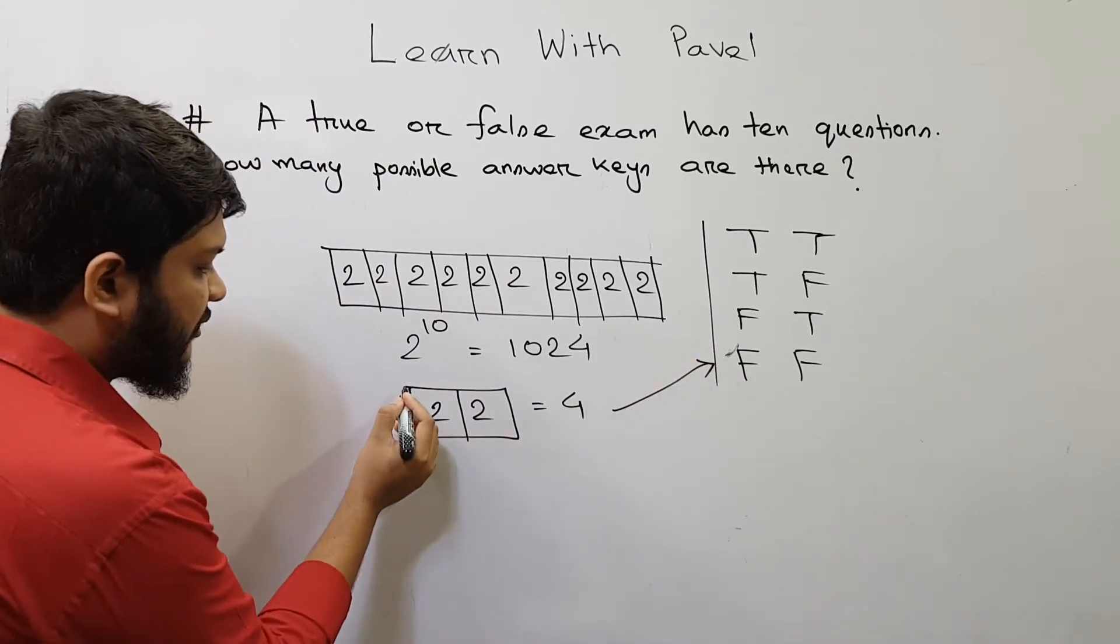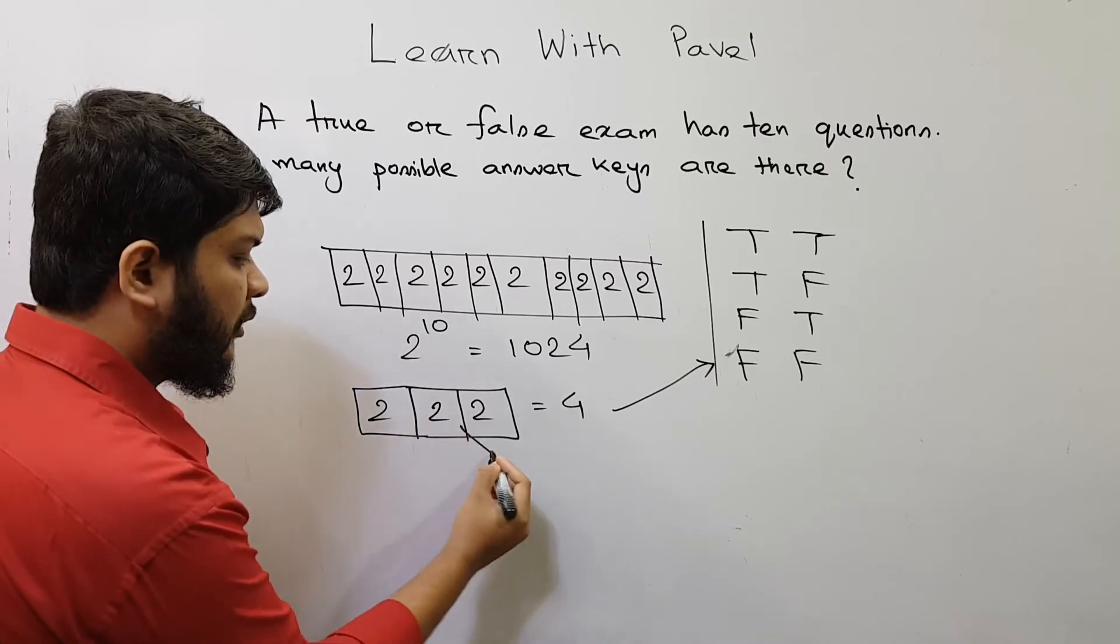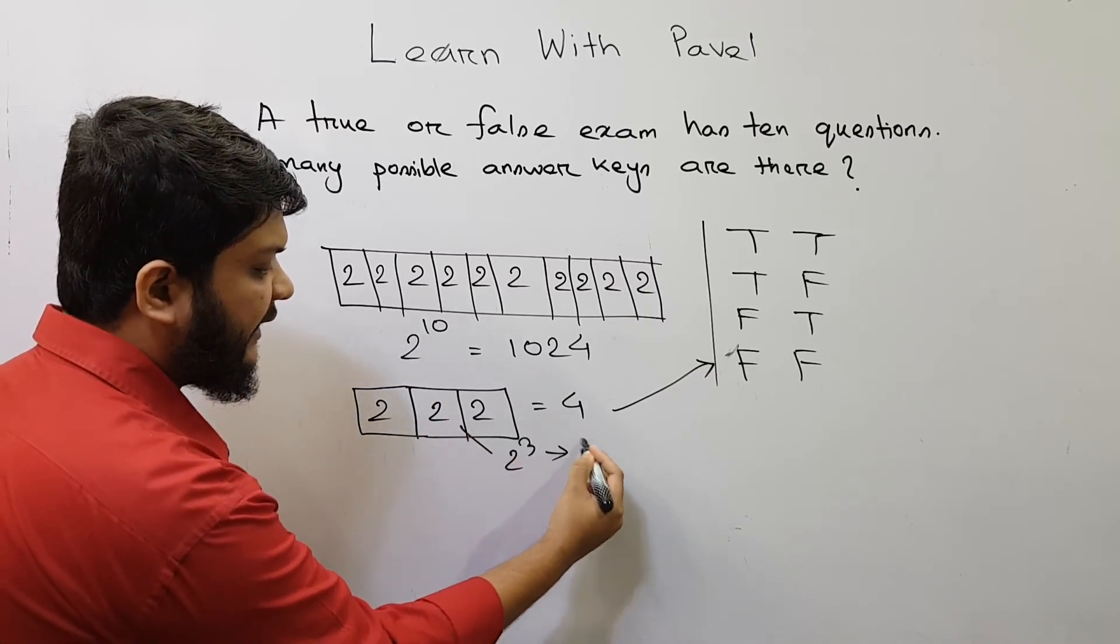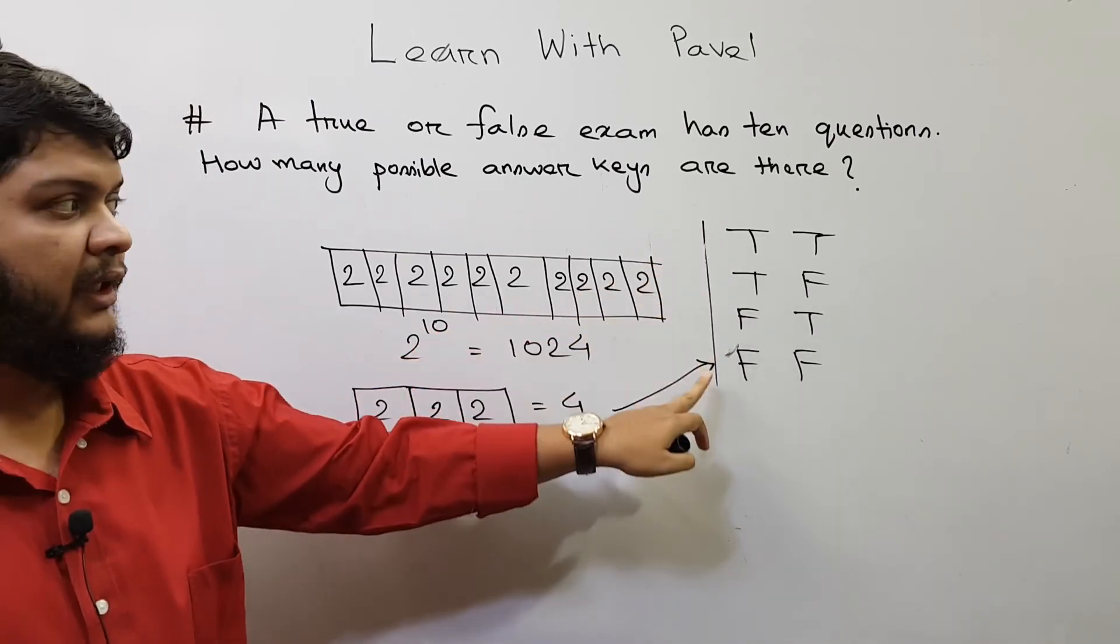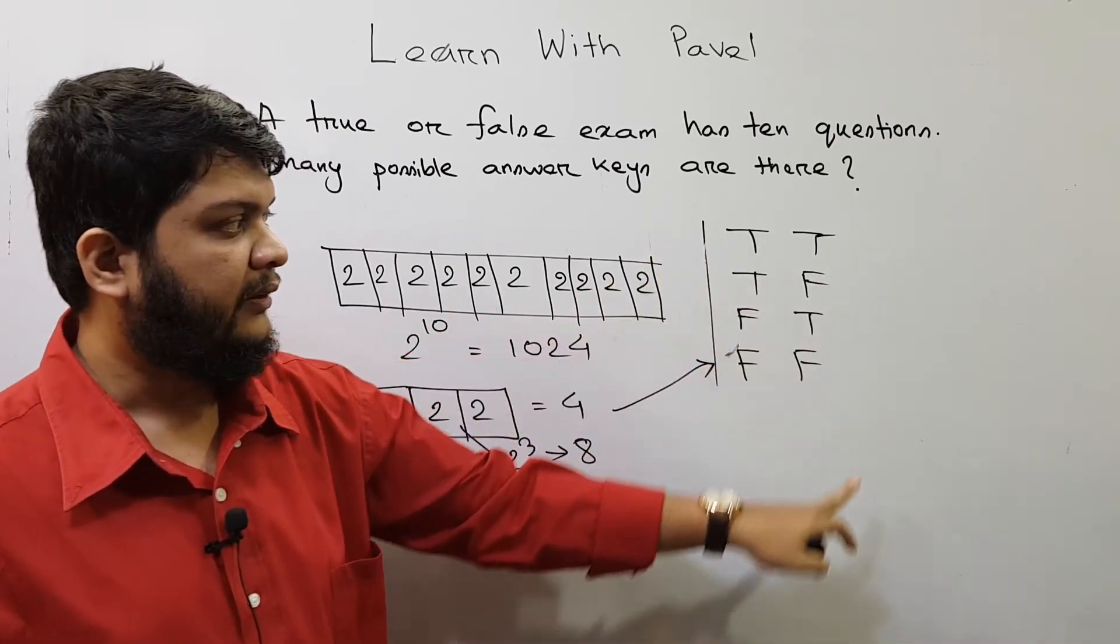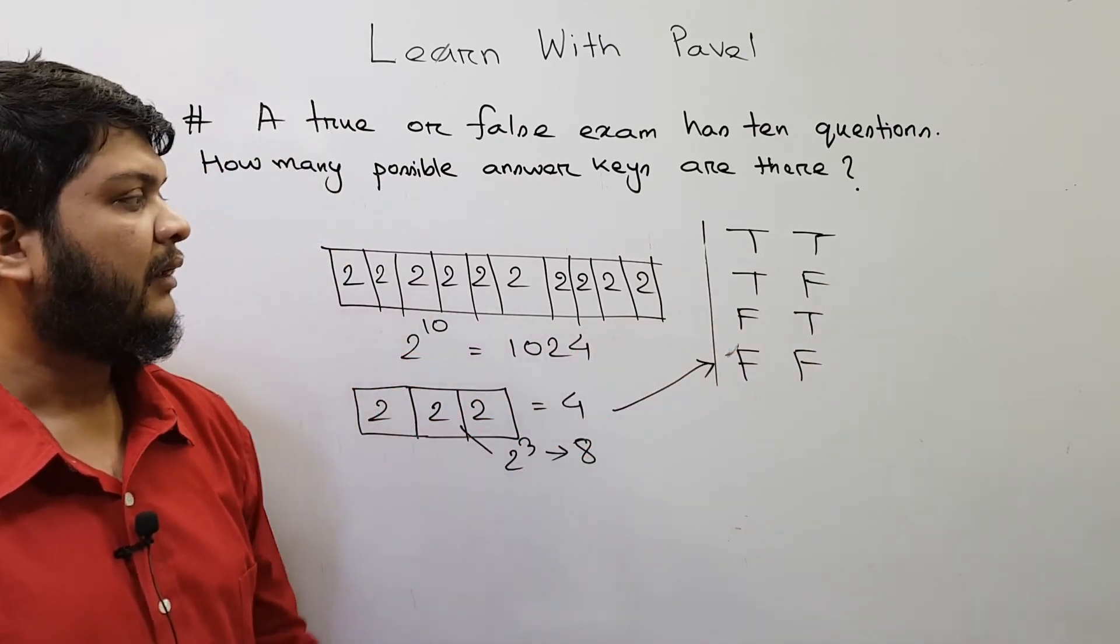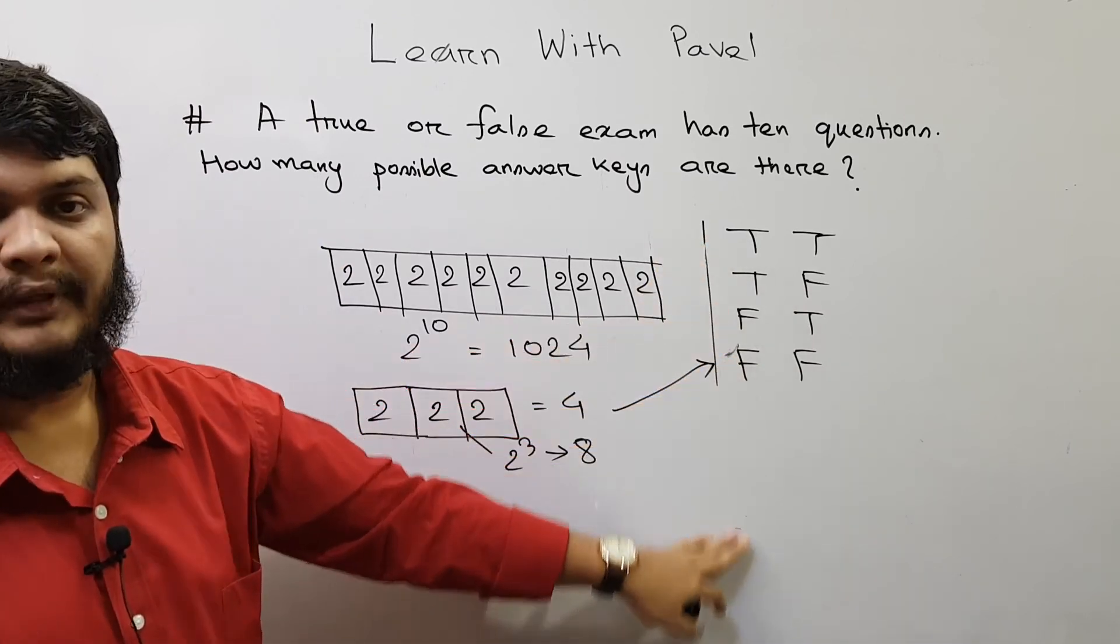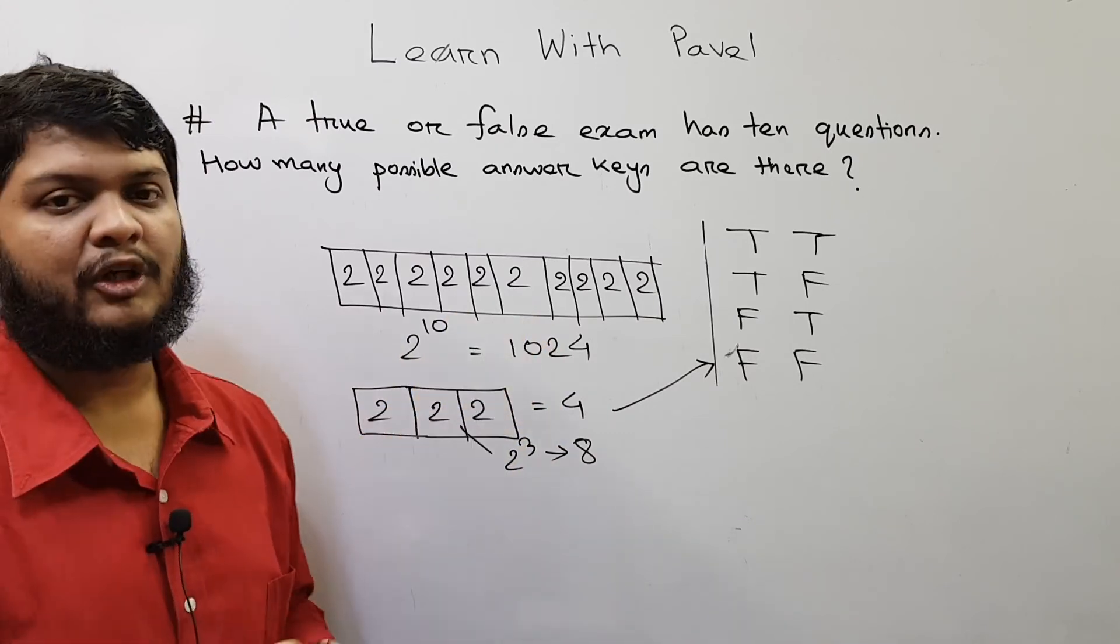Now if you increase one question then it would be 2 cube which is equal to 8. So for three questions, the third question—their first possible case is that all of them are true, and then in the next four combinations all of them will be false. So you see there will be 8 possible combinations.